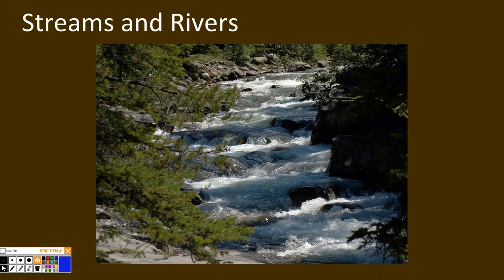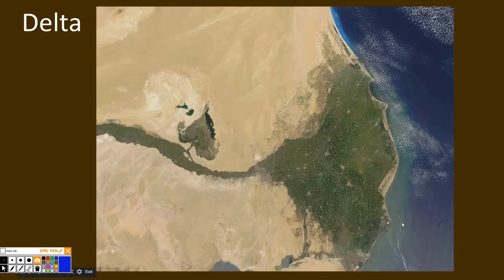Streams are formed by weathering and erosion by flowing water, and can possibly form a canyon if the rock is broken down easily enough. Rivers are formed the same as streams, only larger. The sediment that has been weathered and eroded by rivers is dropped off at the mouth of a river in a large pile, called a delta.